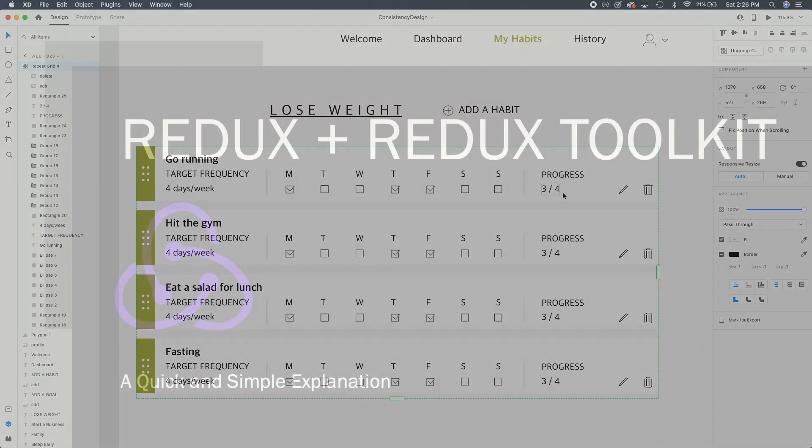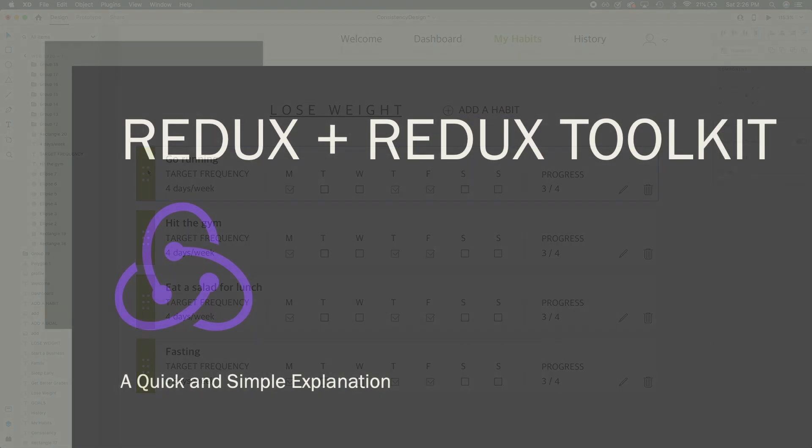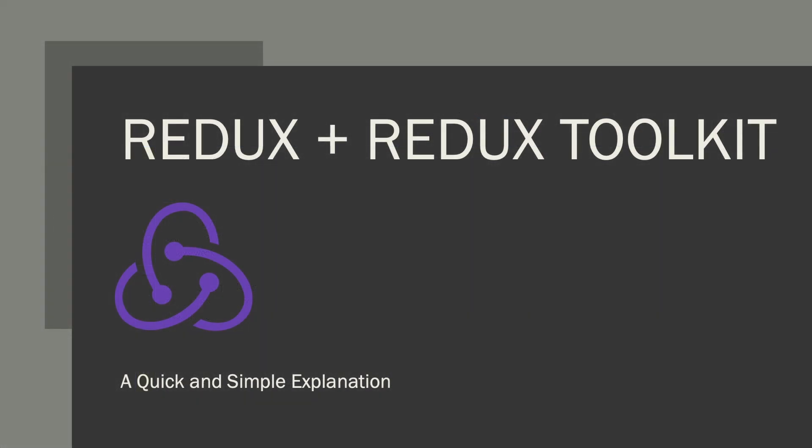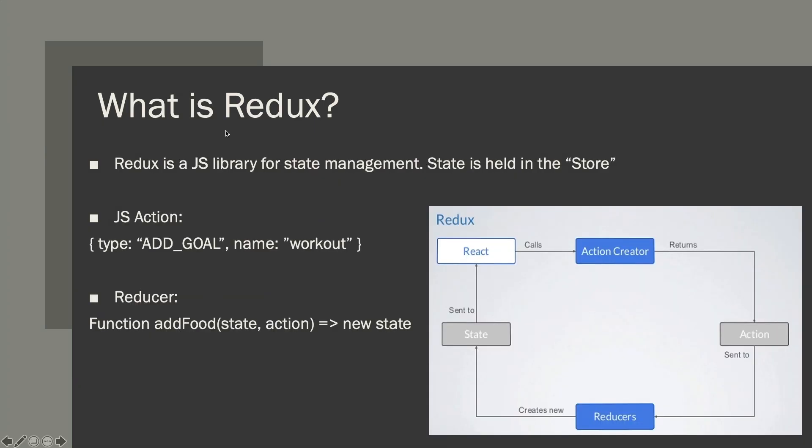I assume that most viewers watching this know the basics of React, so I'm not going to go too in-depth with that. But in a nutshell, React is a JavaScript library for building user interfaces, and the core idea behind React is componentization. Components are basically JavaScript functions or classes that return HTML, and React components can contain state. But when we want that state to be global and shared across multiple components, then we use Redux.